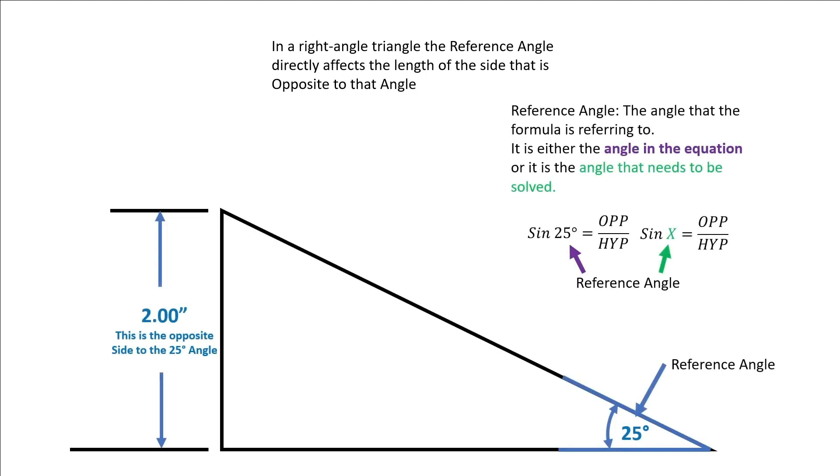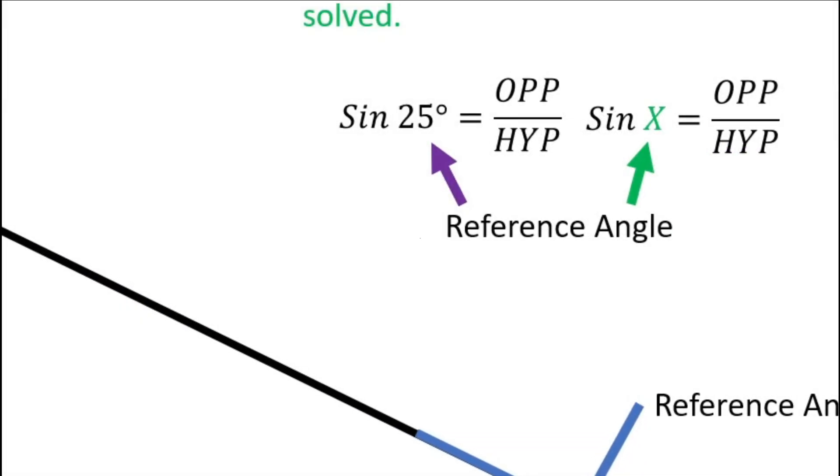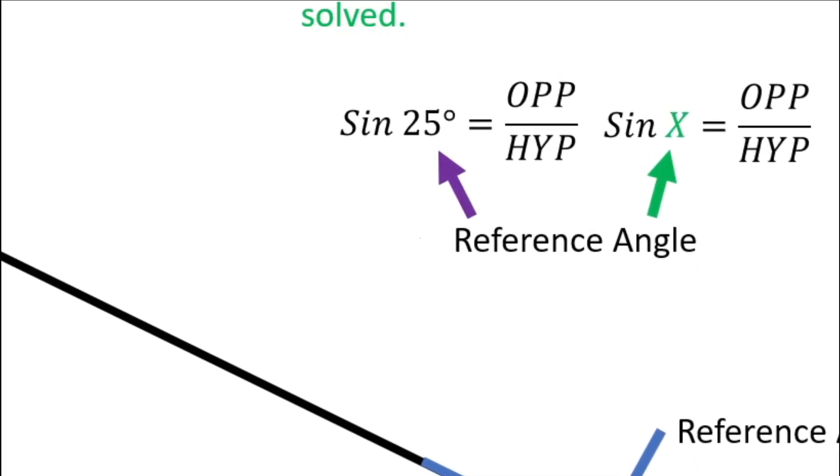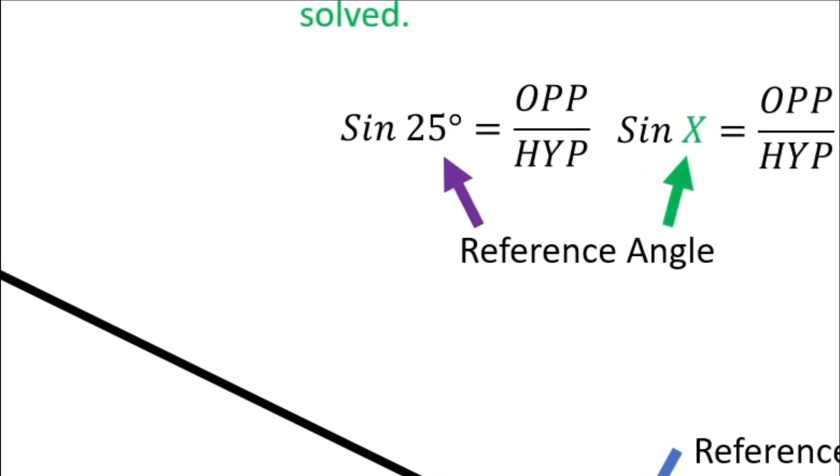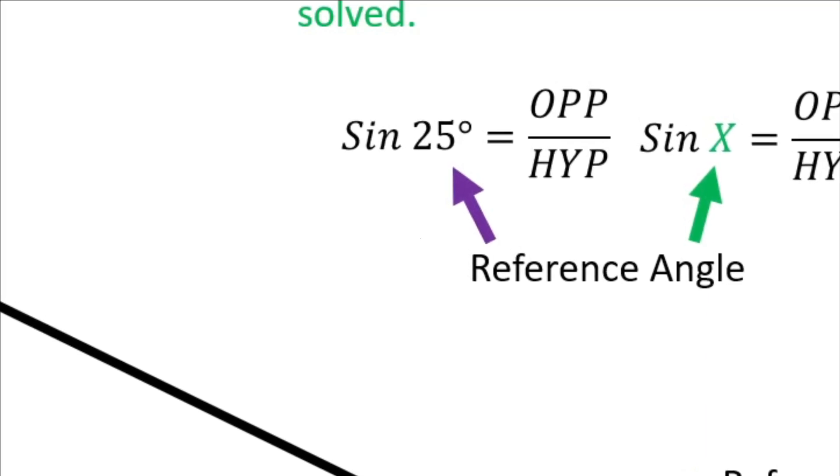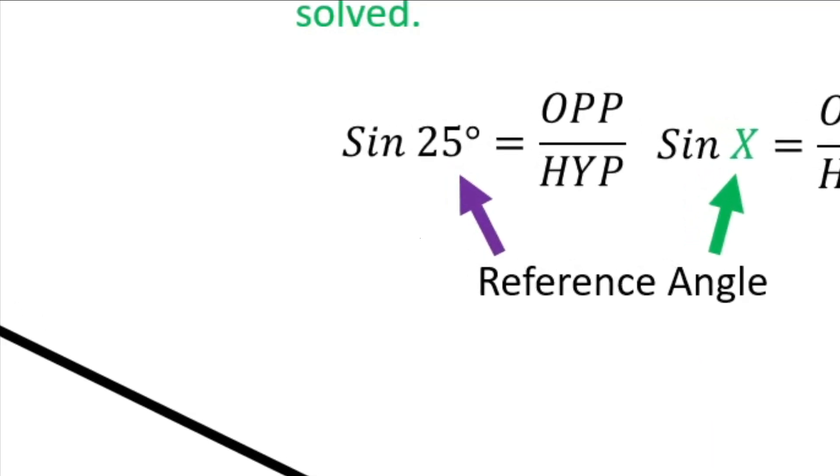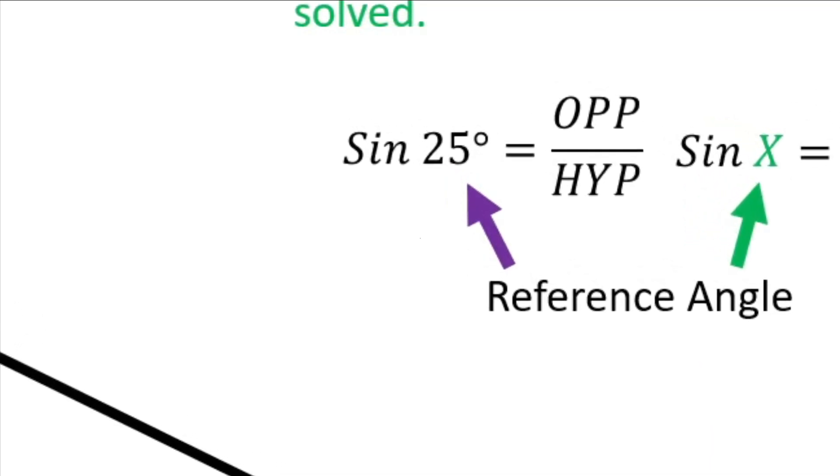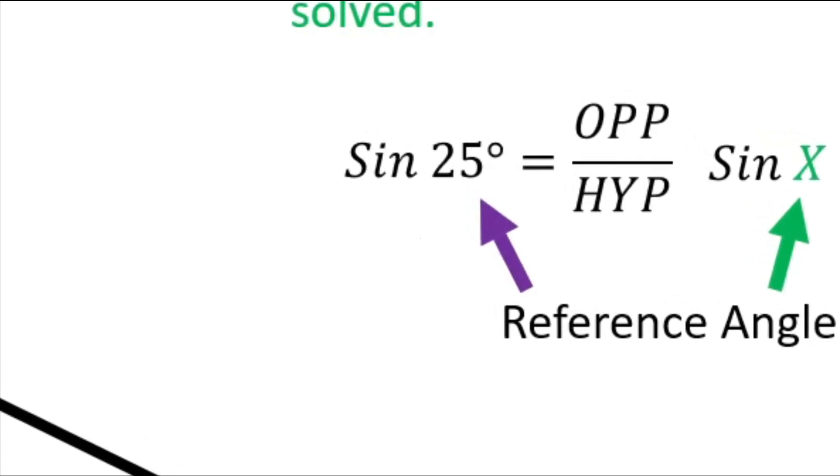The reference angle is the angle that the formula is referring to. There are two possibilities. The reference angle can be the angle that's already given in the equation, or it's the angle that needs to be solved. Notice in this example, sine 25 degrees is the angle being used in the formula. Therefore, the 25 degree angle is the reference angle, or the angle that the formula refers to.